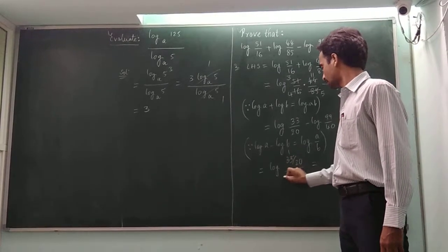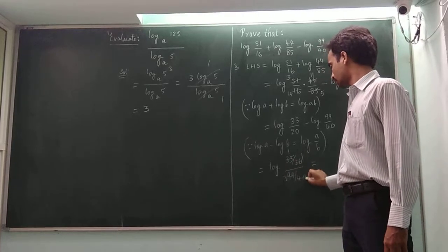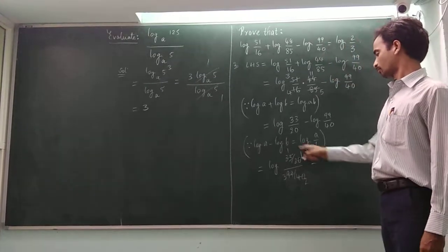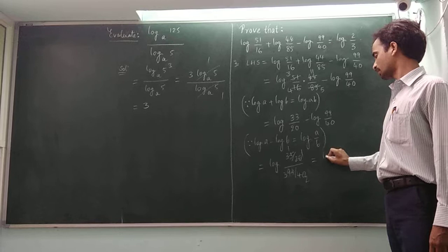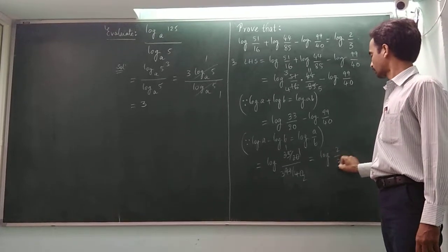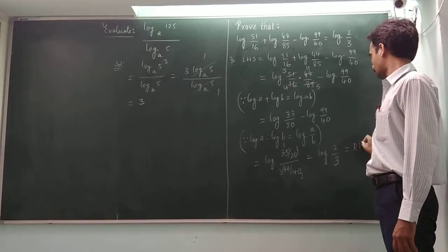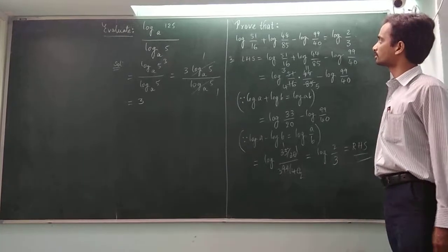Which is equal to 1, 3, 1, 2. So 1 by 3 by 2 means we can get it as log 2 by 3, which is equal to RHS. In this way we can prove this statement.